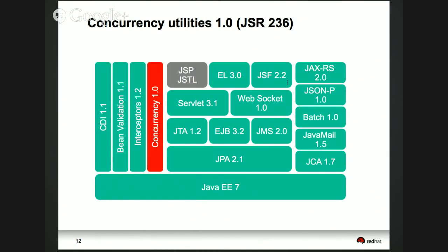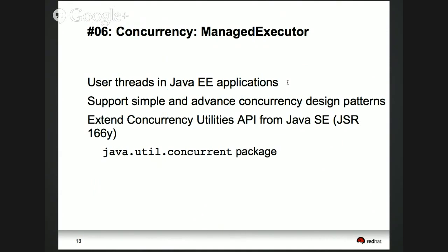Concurrency, JSR 236, is a brand new addition — 1.0 indicates that. In Java EE, you cannot spin up user threads because it's a managed environment. JSR 236 allows you to spin up user threads but managed by the container. You have ManagedExecutorService, ManagedScheduledExecutorService, and ManagedThreadFactory. JSR 236 provides managed versions of all those objects spun up by the container. The biggest advantage is you're leveraging the existing java.util.concurrent package, so the same design principles are applicable for Java EE containers as well.